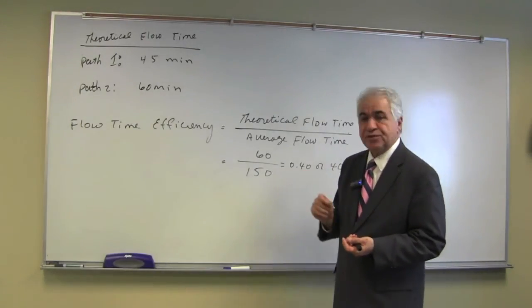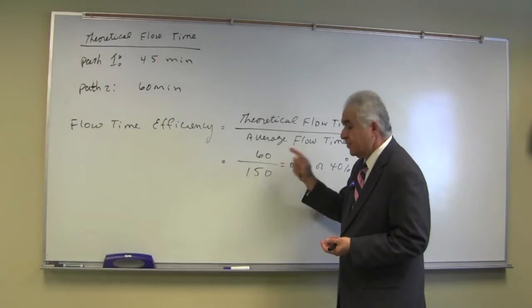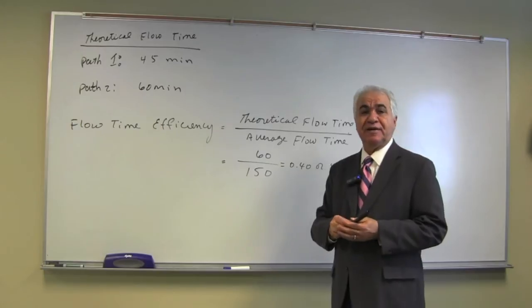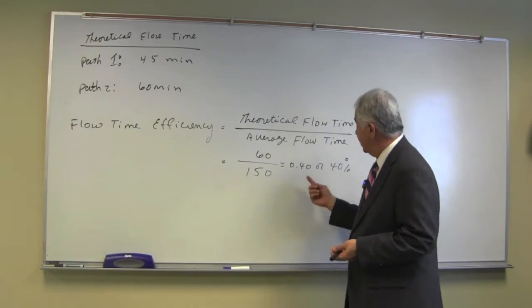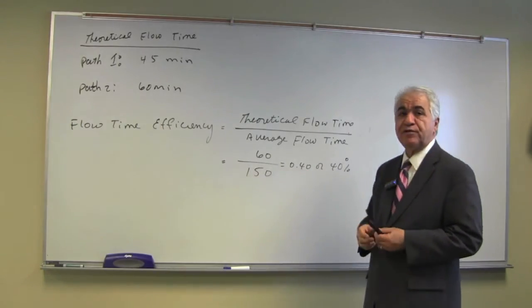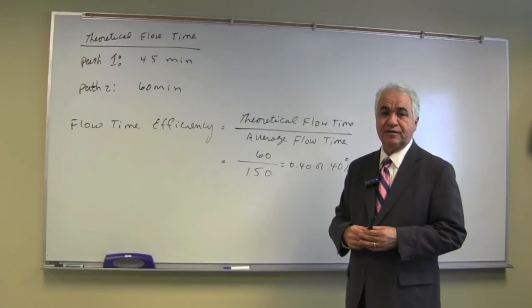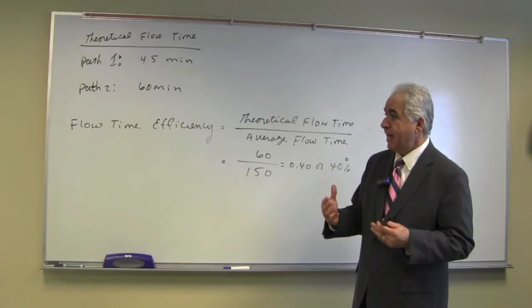Considering that path two is the critical path, the theoretical flow time of path two is 60 minutes, and the total flow time of that path is 150 minutes, which gives us 0.40 or 40 percent as the flow time efficiency of that process or path.